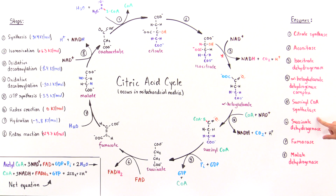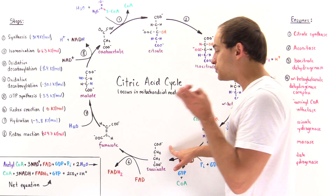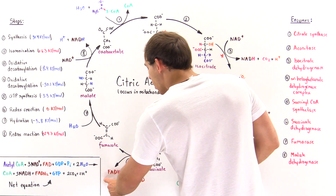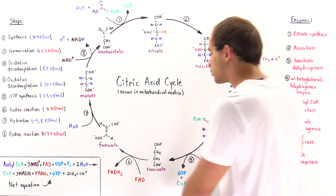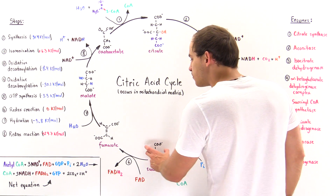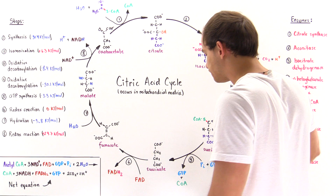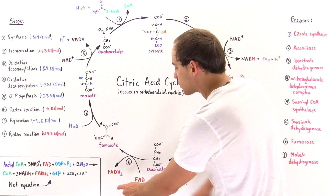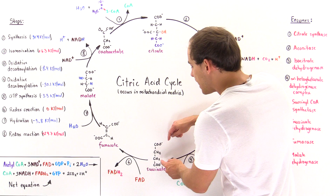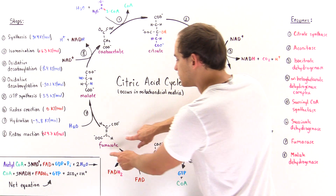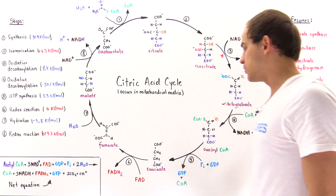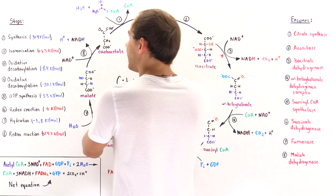Step six is catalyzed by succinate dehydrogenase. What this does is it ultimately abstracts two H atoms, and those two H atoms are then carried by the FAD, so we form the FADH2. We essentially reduce the FAD into FADH2 and oxidize succinate into fumarate, which has a double bond. These two H atoms are abstracted and placed onto the FAD, and we form the double bond between these two carbons to give fumarate. This process is at equilibrium, with a Gibbs free energy value of zero kilojoules per mole under cellular conditions.